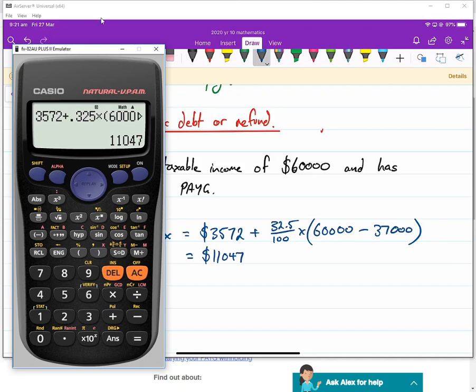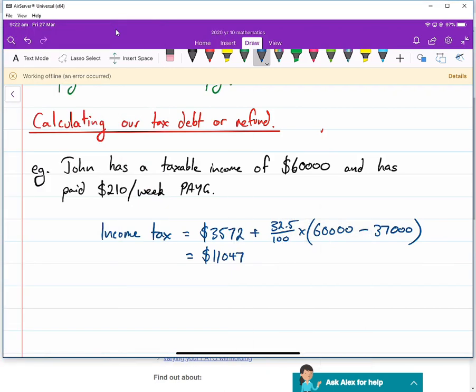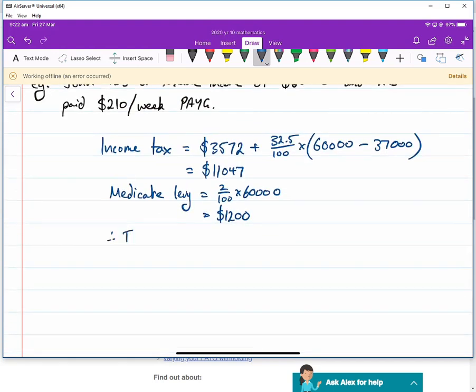His Medicare levy is 2% of $60,000. So 0.02, 2% of $60,000, and that is $1,200. Therefore his total tax is $12,247. That's what he should have paid. I'll put this here. This is what he should have paid.